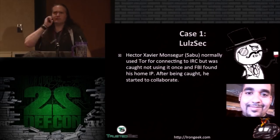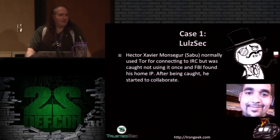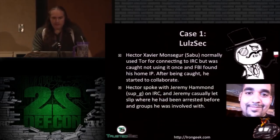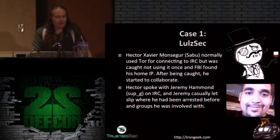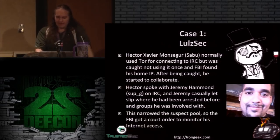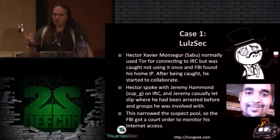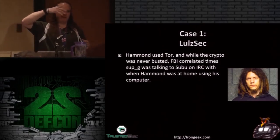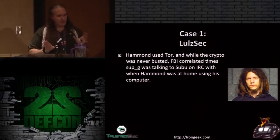Ryan Cleary, part of the anonymous movement in Great Britain, was running one of the IRC servers, got angry, and started dumping everybody's IP addresses online. Meanwhile, another LulzSec member called 'Sup G' — turns out to be Jeremy Hammond — let slip various bits of information: where he had been arrested, political groups he was involved with. This gave investigators a general idea of where he lived in the world, narrowed the suspect pool considerably, and gave them enough evidence to monitor his internet access.